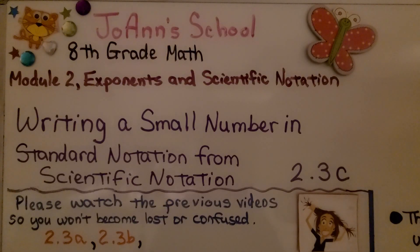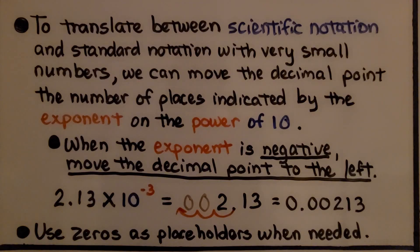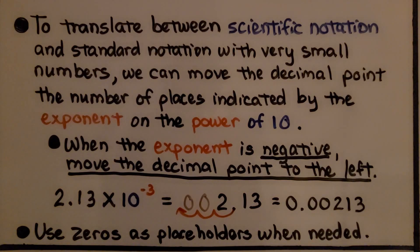Lesson 2.3c: Writing a Small Number in Standard Notation from Scientific Notation. To translate between scientific notation and standard notation with very small numbers, we can move the decimal point the number of places indicated by the exponent on the power of 10.